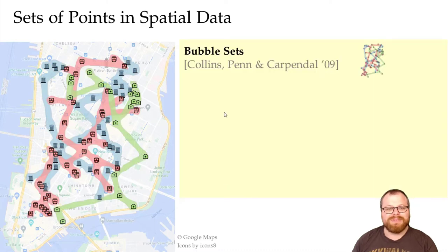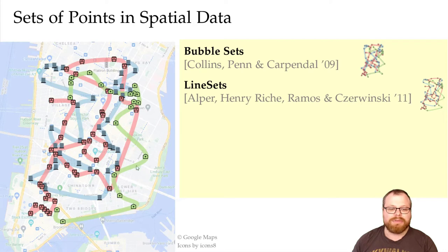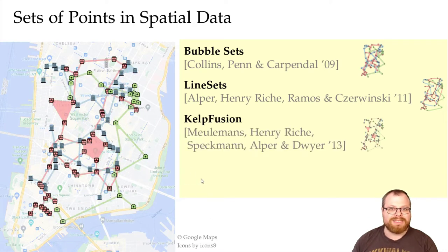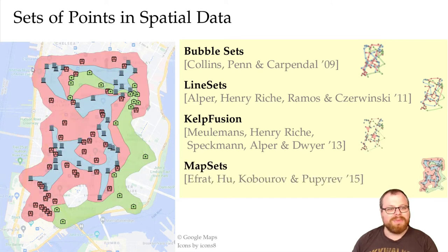There are already a few algorithms that do that. For example, bubble sets, where every set looks like soap bubbles, or line sets, where we have a simple line through all the points of the same category. Then there is kelp fusion, where we represent the sets by trees, and map sets, where the whole map is split into colored regions.